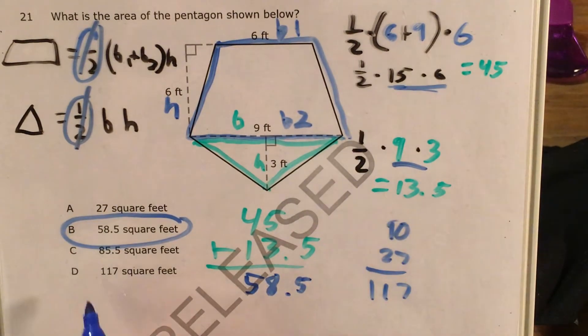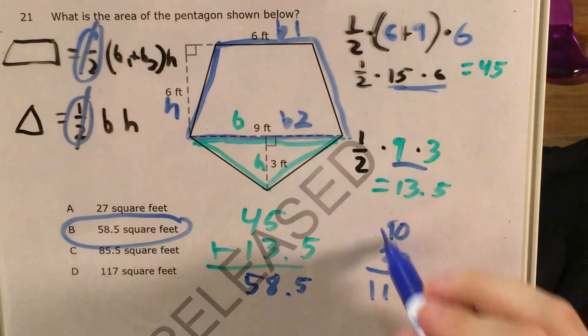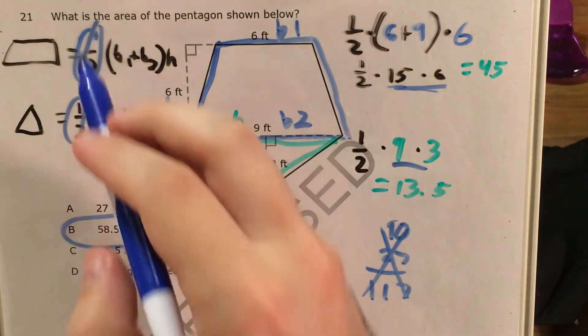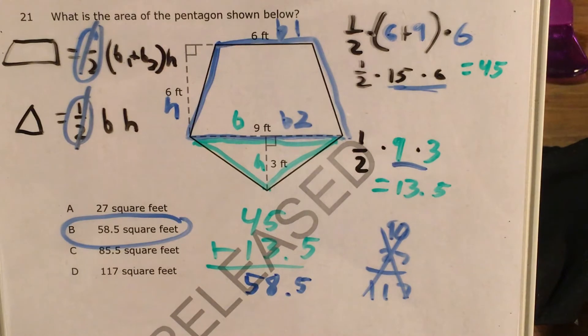But that's not how we do the problem. That would only happen if we forgot about our one-halves in both of our formulas. And that's not what we need to do. We need to remember our formulas and we need to use them correctly, and that's what this problem is all about.